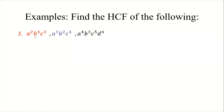The first term, which is color coded, has a², b⁴, and c³. For the second term, we have a³, b², and c⁴. For the third term, we have a⁴, b³, c⁵, and d⁴.